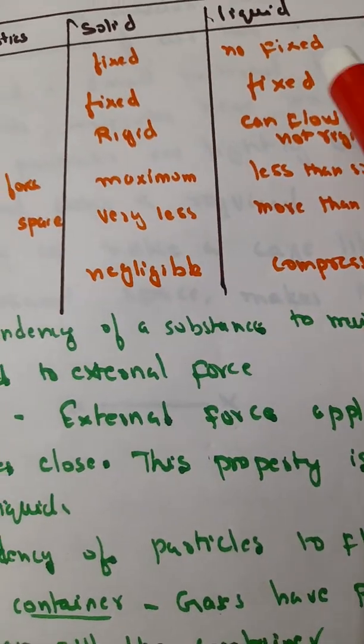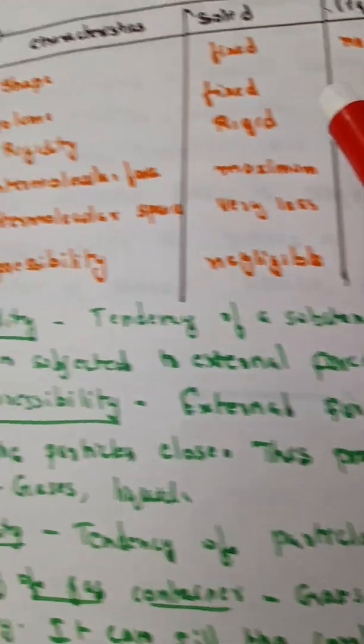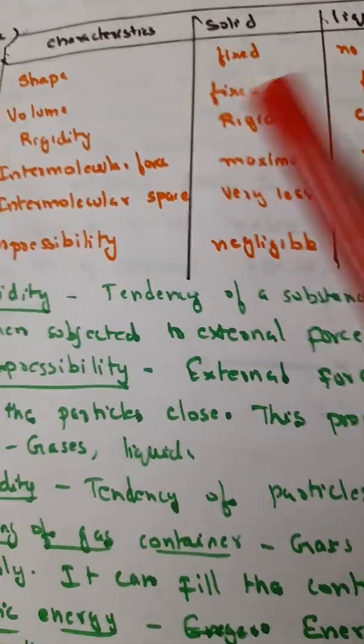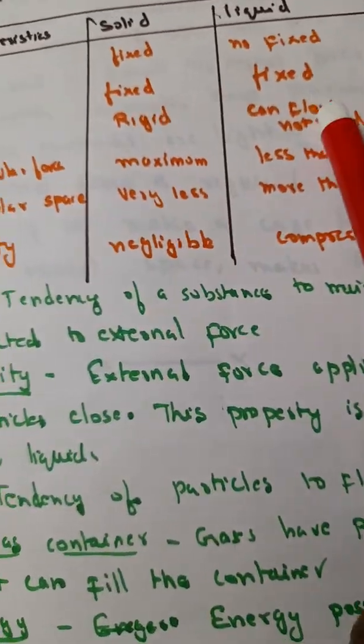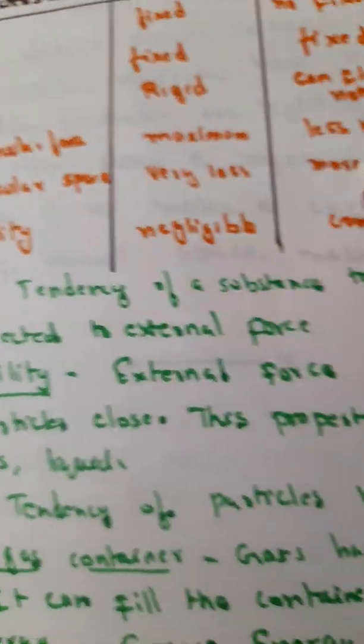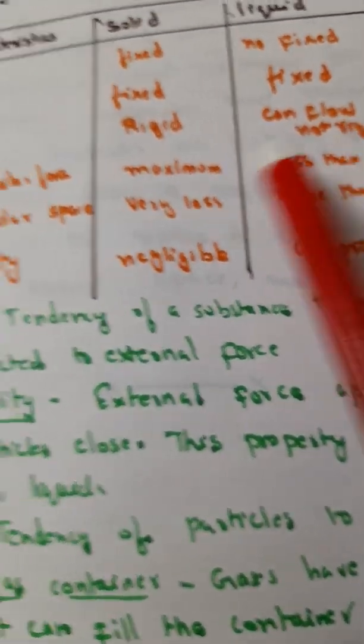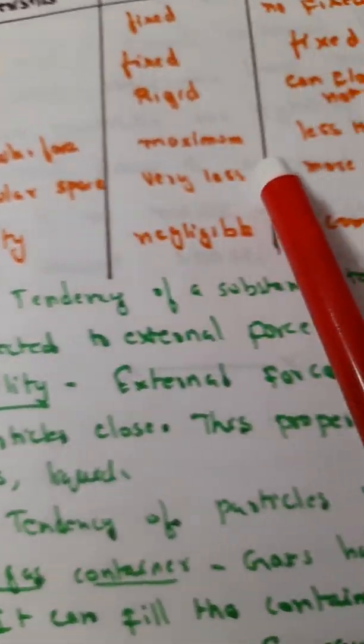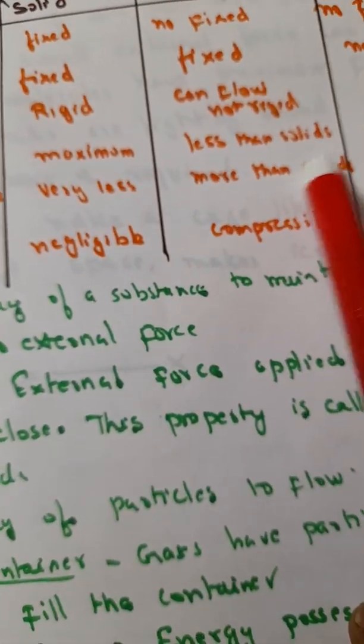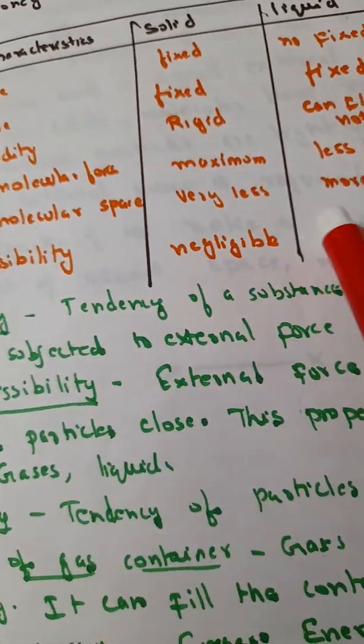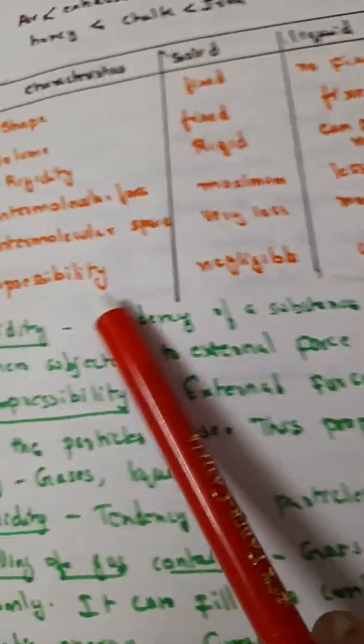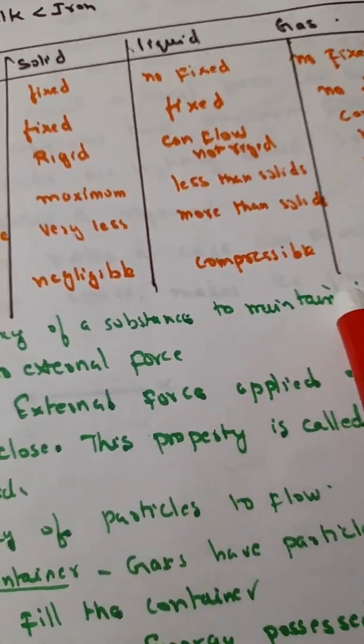Whereas for liquid it is not fixed. What is not fixed? Shape is not fixed, then volume that is fixed, then rigidity it can flow but not rigid. Intermolecular force is less than solids, then intermolecular space is more than solids, and compressibility it is compressible.